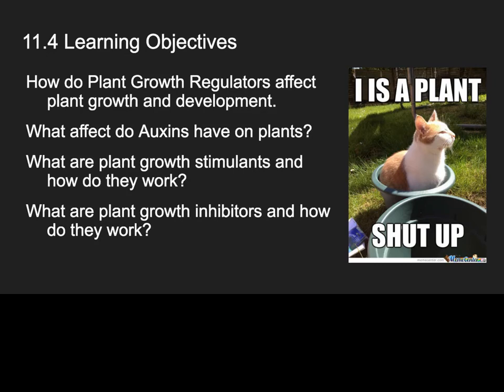By the end of this section I'm hoping that you understand what a PGR is — a plant growth regulator — and how they affect not only plant growth but also development. We're going to look at auxins and how they relate to the PGR family. We'll also look at some growth stimulants and some growth inhibitors. To stimulate growth means to help it grow; to inhibit growth means to hurt or stop it from growing.